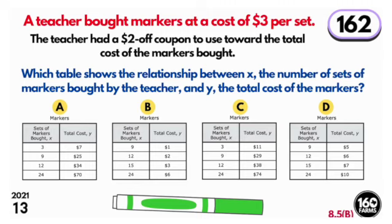Number 13. A teacher bought markers at a cost of three dollars per set. The teacher had a two dollar off coupon to use toward the total cost of the markers bought. Which table shows the relationship between x, the number of sets of markers bought by the teacher, and y, the total cost of the markers?